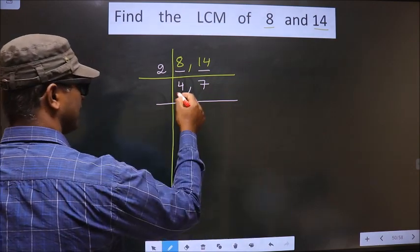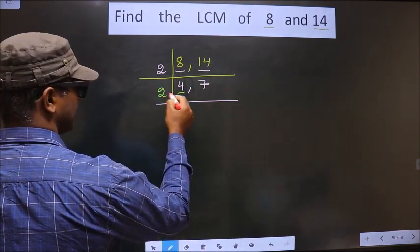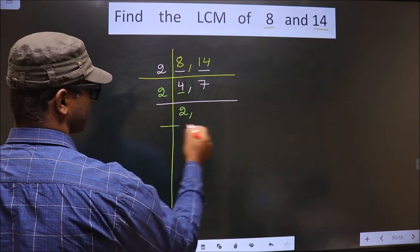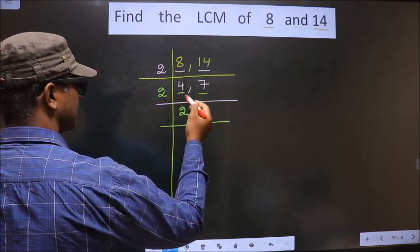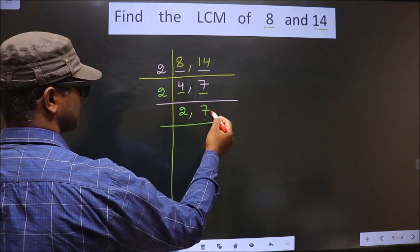Now here we have 4. 4 is nothing but 2 2s 4. 7 is not divisible by 2 so you write down 7 as it is.